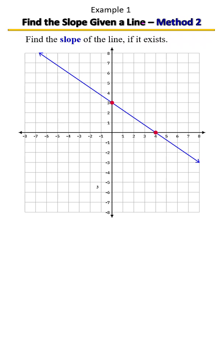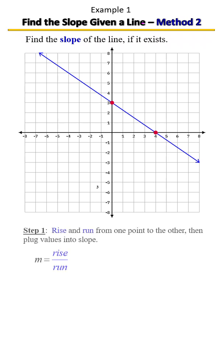Another method for finding the slope when given a line is to rise and run from one point on the graph to another, and then plug in those values into your slope. We're going to start with our x intercept, that point, and we're going to rise up 3 — a rise of 3 and a run of 4 to the negative side, so that's a negative 4.